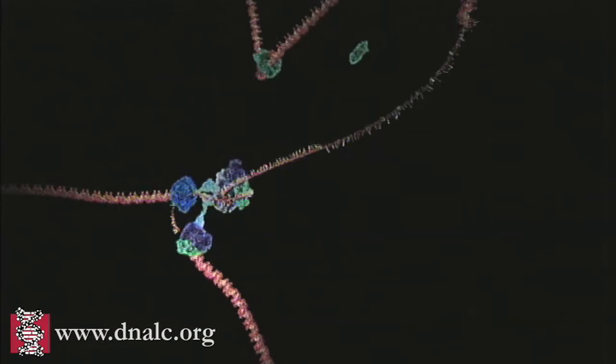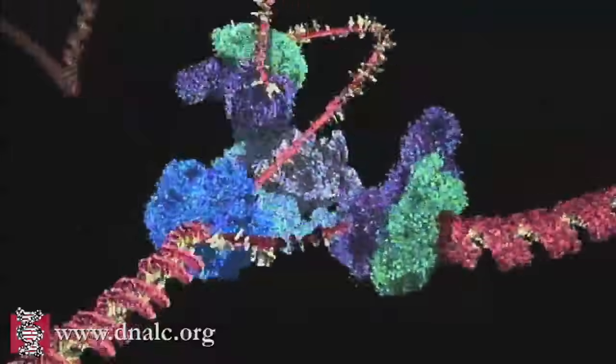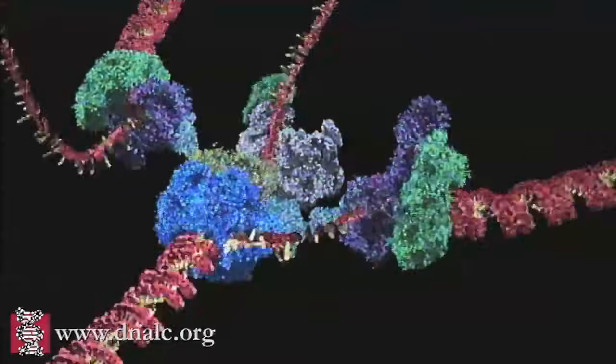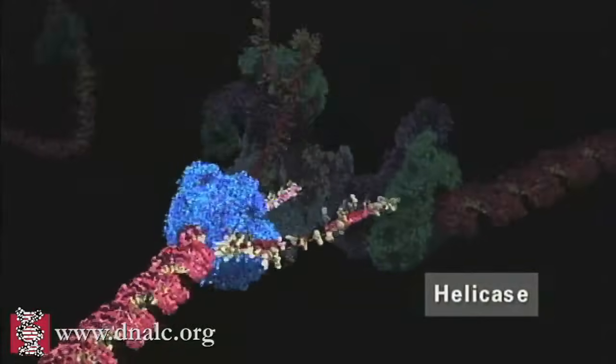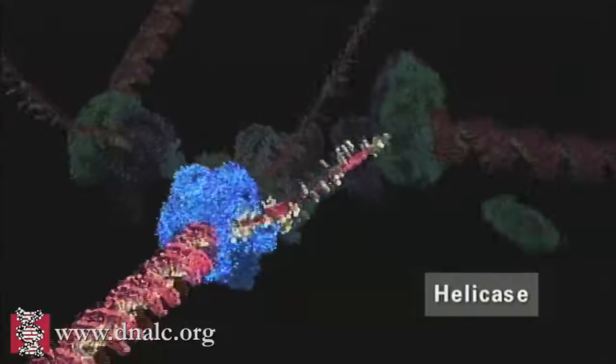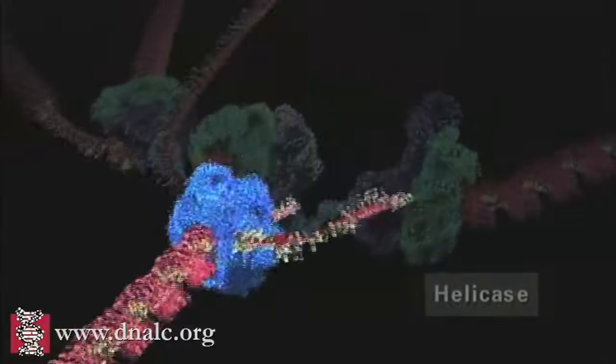The first step in DNA replication is the separation of the two strands by an enzyme called helicase. This spins the incoming DNA to unravel it at 10,000 RPM in the case of bacterial systems.